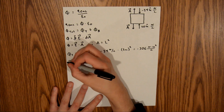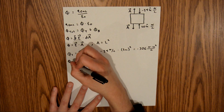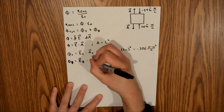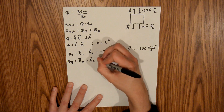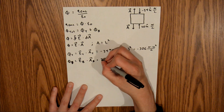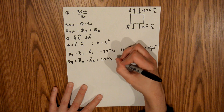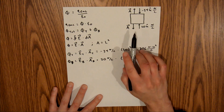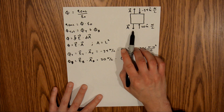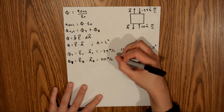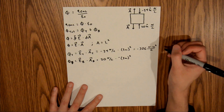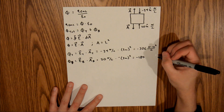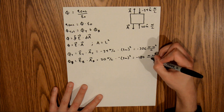Now we can do something similar for the bottom face. The flux into the bottom is equal to the electric field at the bottom times the area of the bottom, and that is equal to 20 newtons per coulomb times our area, which again is 3 meters squared. But in this case, the vector normal to our area is pointed in the negative z direction, so we need to introduce a negative right there. If you plug that into your calculator, you will find that this is equal to negative 180 newtons times meters squared per coulomb.